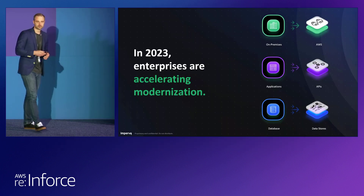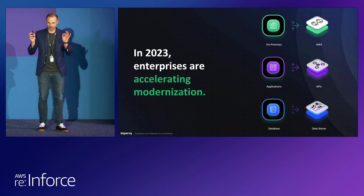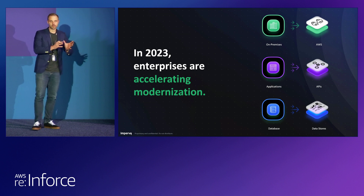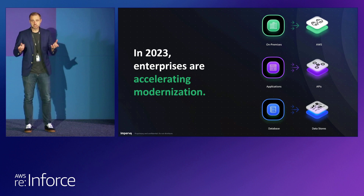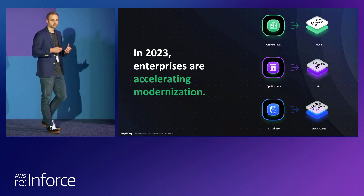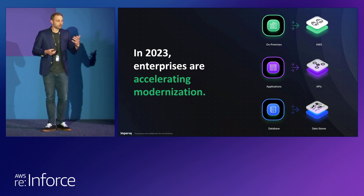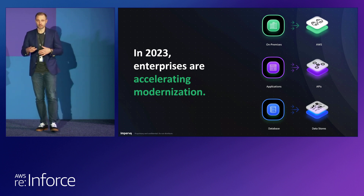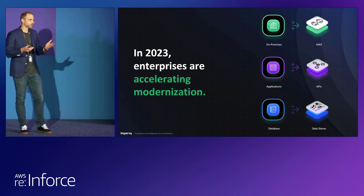Right now, enterprises across the board are modernizing. We all went to re:Invent and heard modernization — the key word absolutely everyone's talking about. And this isn't just moving and migrating workloads from on-premises to AWS. This is also changing the way applications are built — from traditional web applications to APIs, microservices, serverless functions, and from databases to data stores and data lakes.